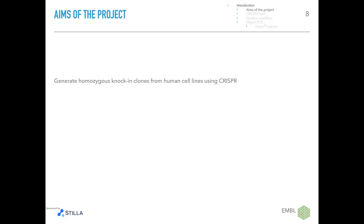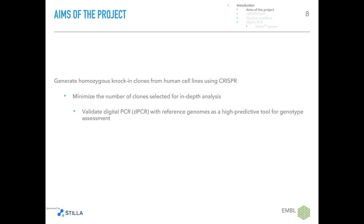The growth, maintenance and analysis of a large number of clones is extremely cost-intensive and requires full-time technical dedication for several weeks. One important aspect of CRISPR editing is the screening — we have to deal with hundreds of clones at the same time. Therefore, we first aim to minimize the number of clones to be selected as early as possible along the CRISPR pipeline. We implemented digital PCR as a quantitative, high-throughput technology to screen CRISPR-generated clones.